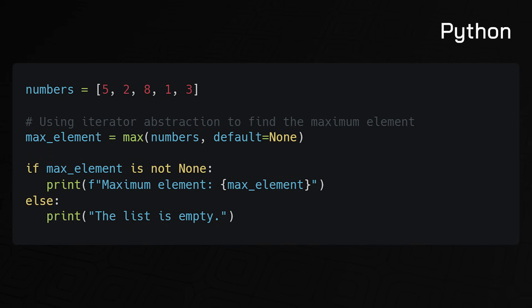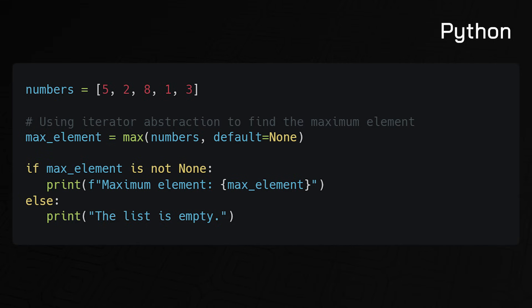In other languages like Python, iterators are not a zero-cost abstraction. Python requires additional runtime checks to ensure the integrity of the iteration process, because collections can change in size or structure during iteration. Systems programming languages like Rust can't afford this type of performance drag.